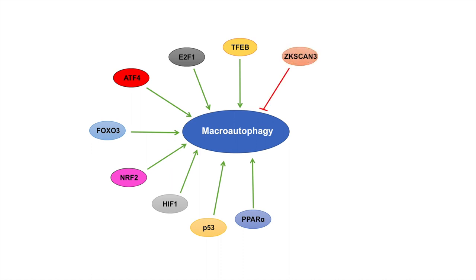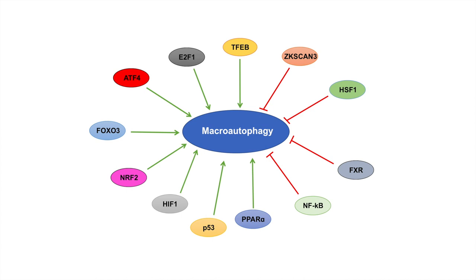Conversely, in the next lesson we're going to talk about transcriptional inactivators or repressors of macroautophagy. These include ZACScan3, HSF1 or heat shock factor 1, FXR, and nuclear factor kappa B or NF-kappa B, and we'll talk about how all of these regulate macroautophagy through transcriptional regulation.